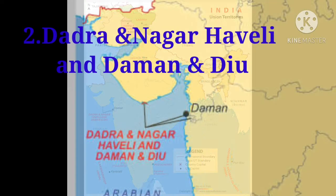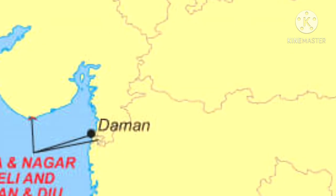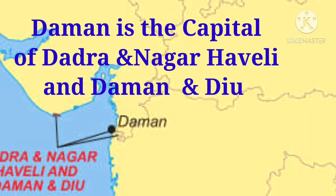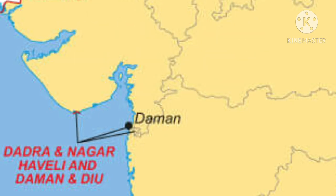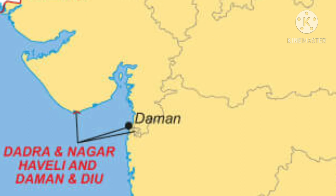Dadra and Nagar Haveli and Daman and Diu are combined to form a single Union Territory. The land area of this Union Territory is 491 km². Daman is the capital of Dadra and Nagar Haveli and Daman and Diu.